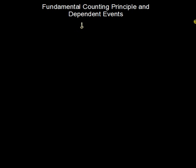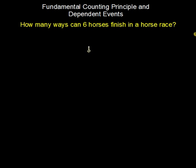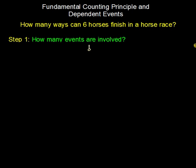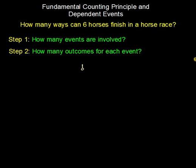Let's take a look at the fundamental counting principle when there are dependent events. A good example for this is a horse race. The question is: how many ways can six horses finish in a horse race? When using the fundamental counting principle, we should ask how many events are involved, and how many outcomes there are for each event. Then we can use the principle to figure out the total number of outcomes for the race.